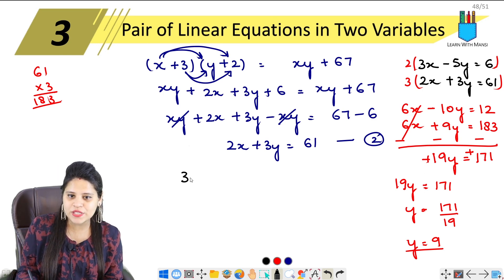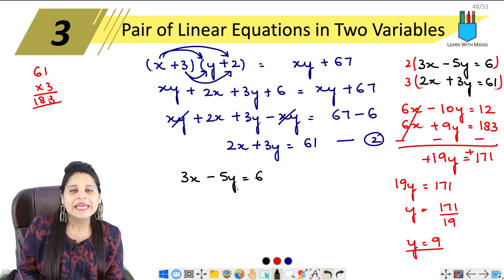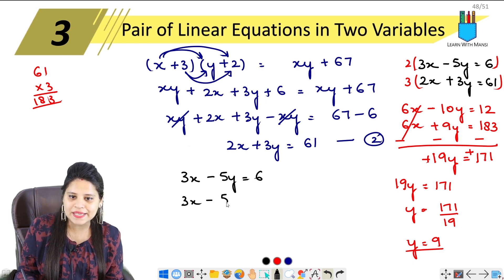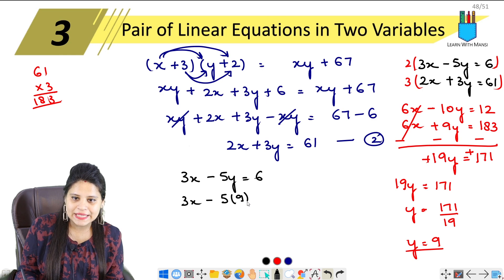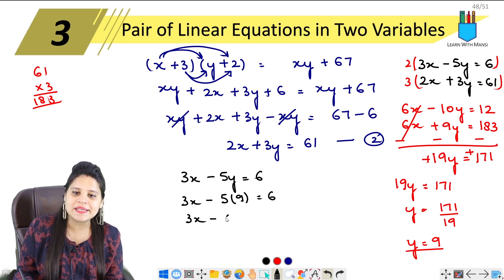Let's substitute into the first equation: 3x − 5y = 6. Putting y = 9: 3x − 5(9) = 6, which gives 3x − 45 = 6.